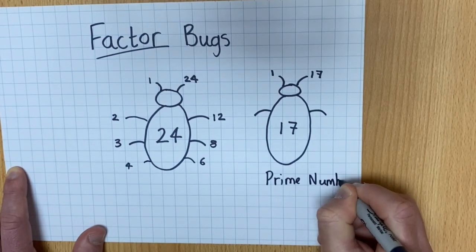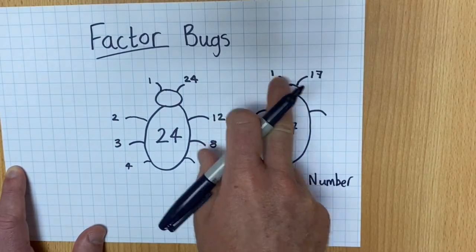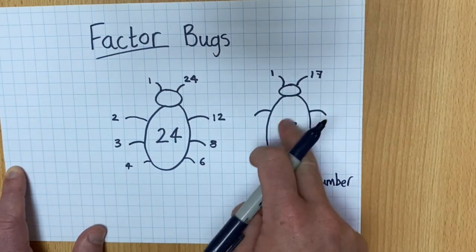So if your factor bug only has the 1 and the number in the middle of the body, then it must be a prime number.